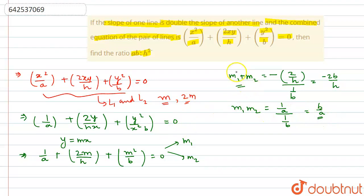Now, we know that one root is double the other, so if m₁ = m, then m₂ = 2m. Therefore m + 2m = -2b/h, giving us 3m = -2b/h. For the product, m · 2m = 2m² = b/a.